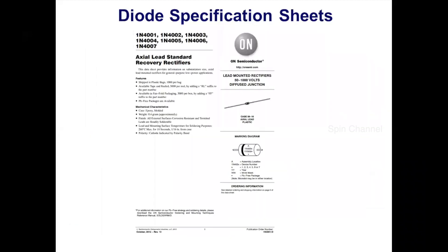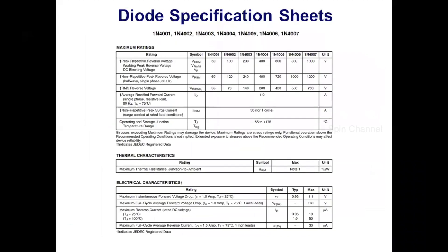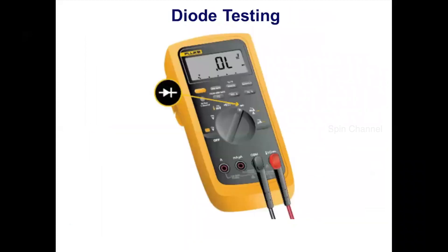You can see the same parameters from a different datasheet from ON Semiconductor, showing maximum ratings followed by electrical characteristics. Next, let us look at diode testing.